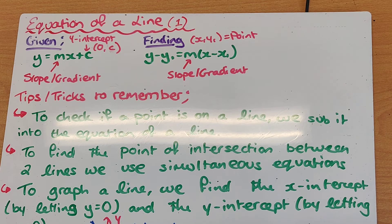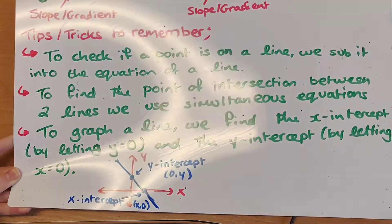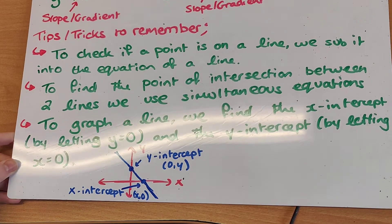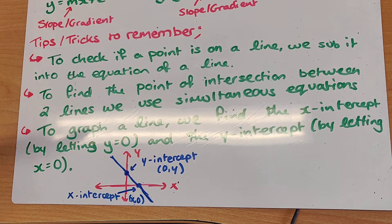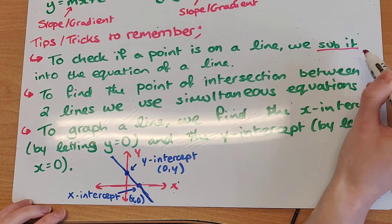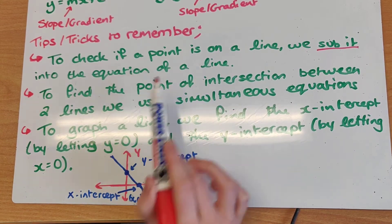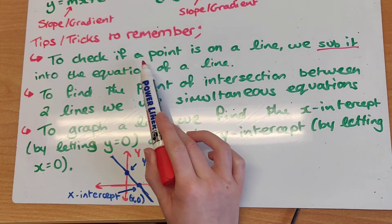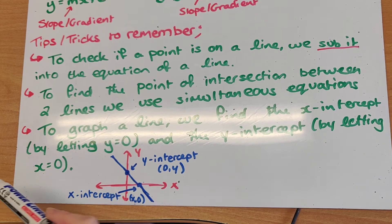Now, using the equation of a line, there are a few tips or tricks from the junior cert we need to remember. The first thing is: if a problem asks us to check if a point is on a line, all we have to do is substitute the x and y coordinates of the point into our equation of a line. So if we want to check if a point is on a line, we sub it in.